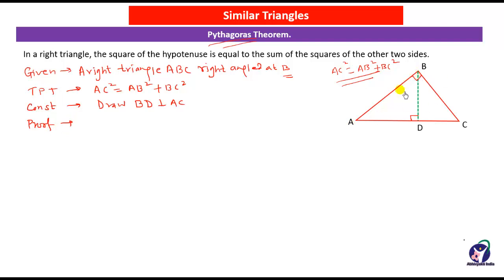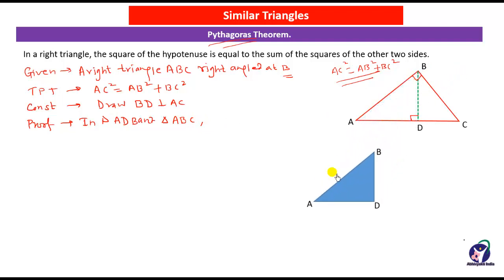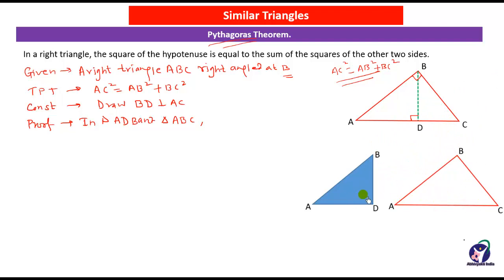We will take two triangles — triangle ABD and the main triangle ABC — and prove them similar. In triangle ADB and triangle ABC, angle A is common to both triangles. Angle D and angle B are each 90 degrees: angle B is given and angle D is 90 degrees by construction.